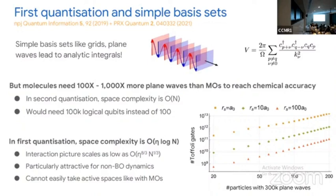The drawback is that for sufficient accuracy, you actually need a much larger number of orbitals — perhaps a hundred or a thousand times more than with molecular orbitals. If you used the same second-quantized representation where each orbital needs a qubit, that would be an unmanageable number of qubits. Instead, we use what's called first quantization, where we have a bunch of registers recording the occupied orbitals, each corresponding to an electron momentum.